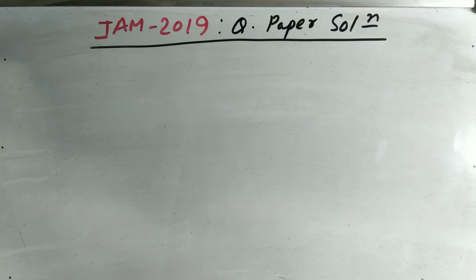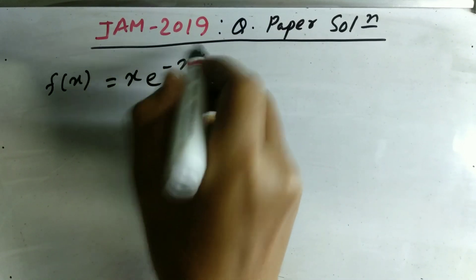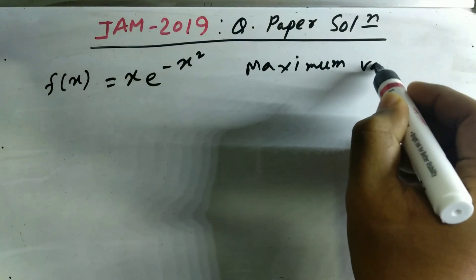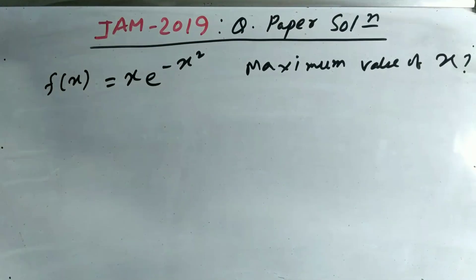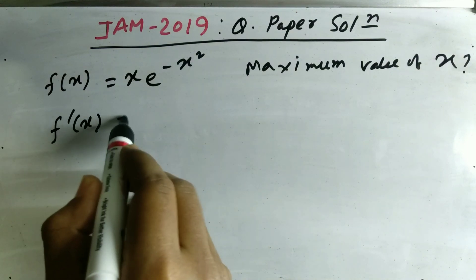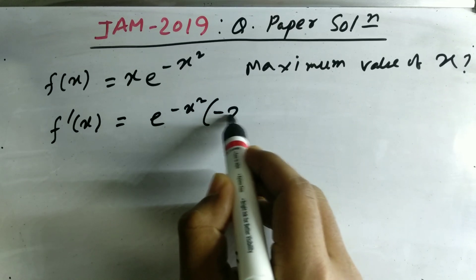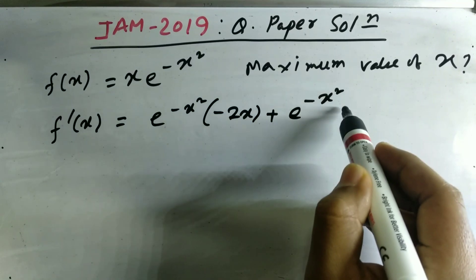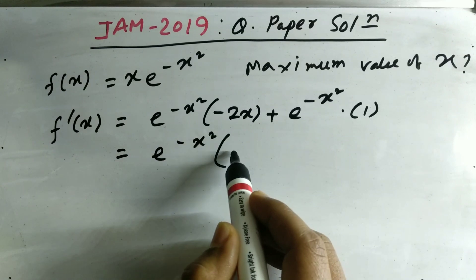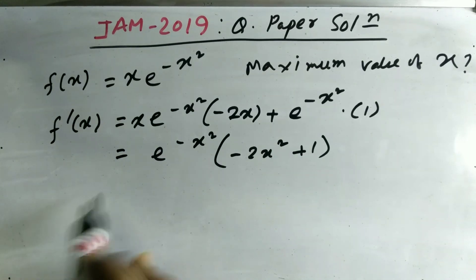The first question is: f(x) = x·e^(-x²). You have to find the maximum value of x. To calculate the maximum value, you need to differentiate this function — that is, you have to calculate f'(x). If we do the differentiation, we will get a result, and after working through it we arrive at the derivative expression.